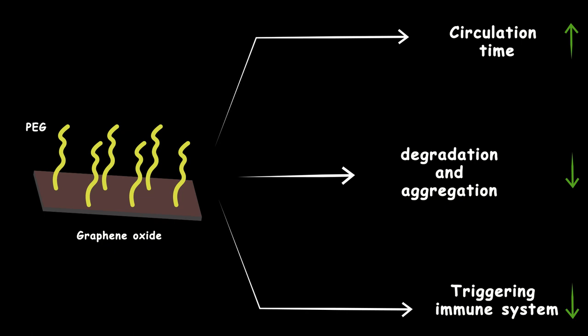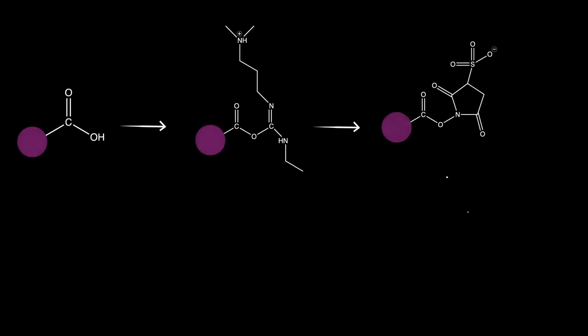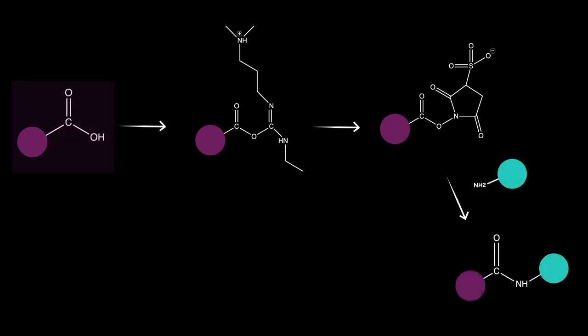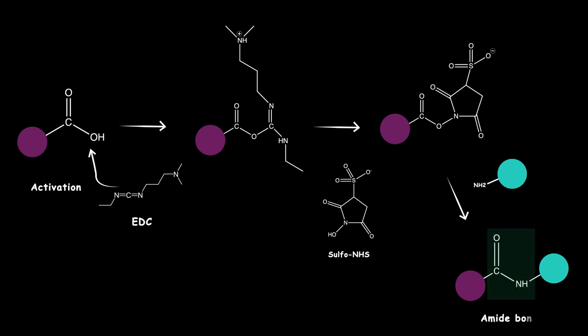So, how did the authors functionalize their graphene oxide with PEG? Actually, it is a very popular chemical reaction that we can use to make a covalent bond between any two substances. One should have an amine functional group, and the other should have a carboxyl group. In this situation, we add two substances, EDC and NHS. These two substances activate the carboxyl groups and make a covalent amide bond.